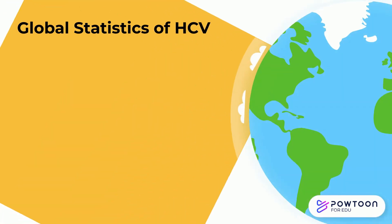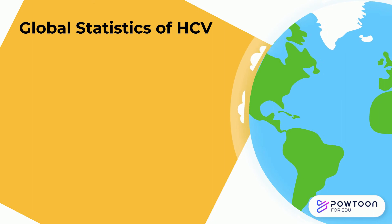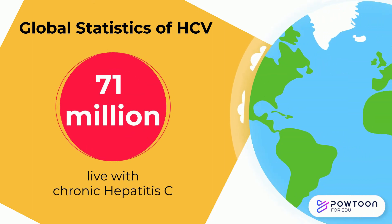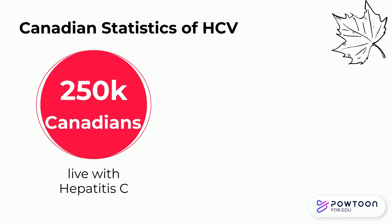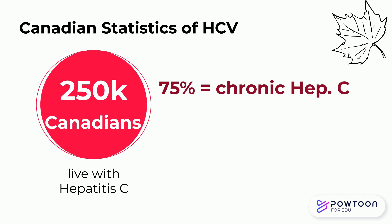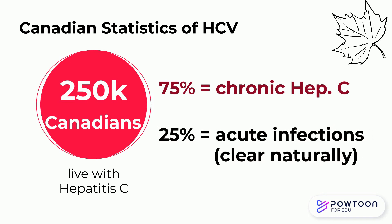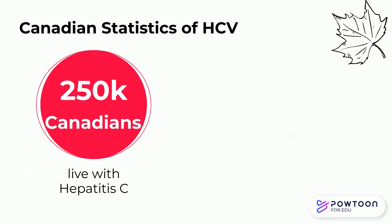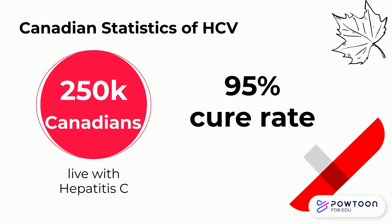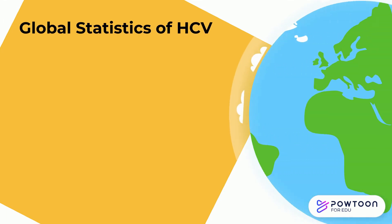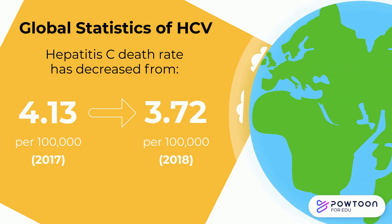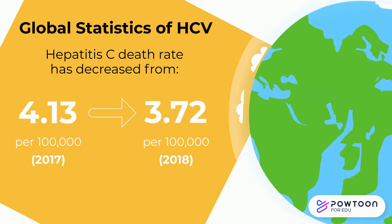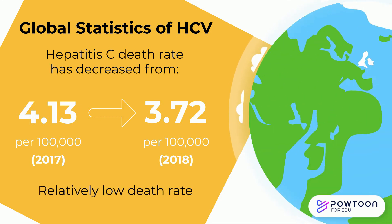Now let's look at some statistics regarding hepatitis C. On a global scale, there are an estimated 71 million people living with chronic hepatitis C. 250,000 Canadians are reported to have HCV, with 75% living with it as a chronic condition, while 25% spontaneously cleared their infections through their immune system. Roughly 95% of cases in Canada are or can be cured. Globally, the death rate caused by hepatitis C decreased from 4.13 to 3.72 individuals per 100,000 from 2017 to 2018, showing a very low death rate.